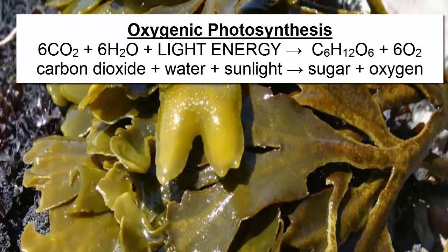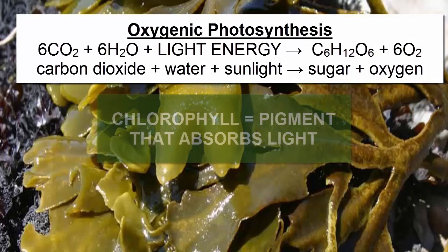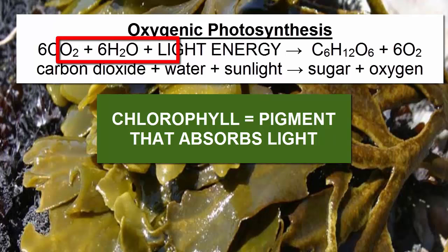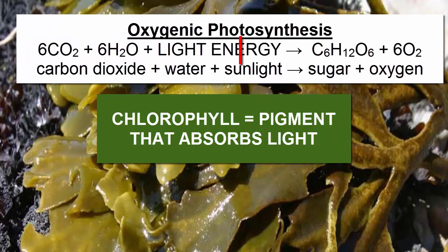Photosynthesis uses the pigment known as chlorophyll to capture light energy from the sun, which it then uses to combine abundant surrounding molecules like carbon dioxide and water to synthesize sugar molecules.